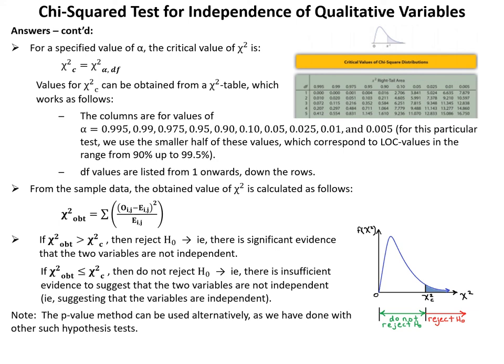For a specified value of alpha, the critical value chi-squared_c = chi-squared at alpha and DF, obtained from a chi-squared table. The columns correspond to alpha values from 0.995 down to 0.005, and DF values are listed down the rows. The obtained value of chi-squared is calculated as: chi-squared obtained = Σ [(O_ij − E_ij)² / E_ij] summed over all cells. If chi-squared obtained > chi-squared_c, reject H₀ — significant evidence that the two variables are not independent. If chi-squared obtained ≤ chi-squared_c, do not reject H₀.